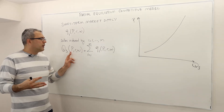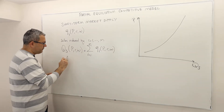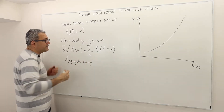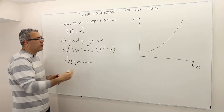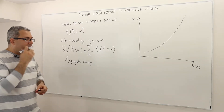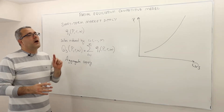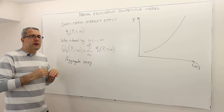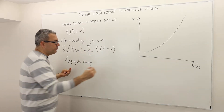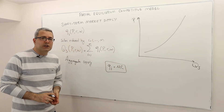Because we are talking about a perfectly competitive market, each firm is facing the same output price P. So the aggregate supply, or the market supply, is nothing but the summation or aggregation of the individual supply curves. The individual supplies in a perfectly competitive market for a profit-maximizing firm — the optimal quantity is basically determined by this equality: QI equals the marginal cost.